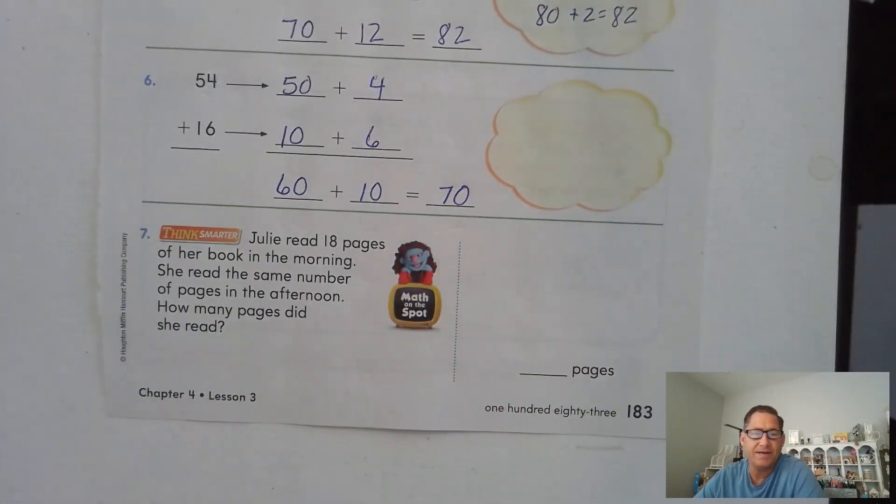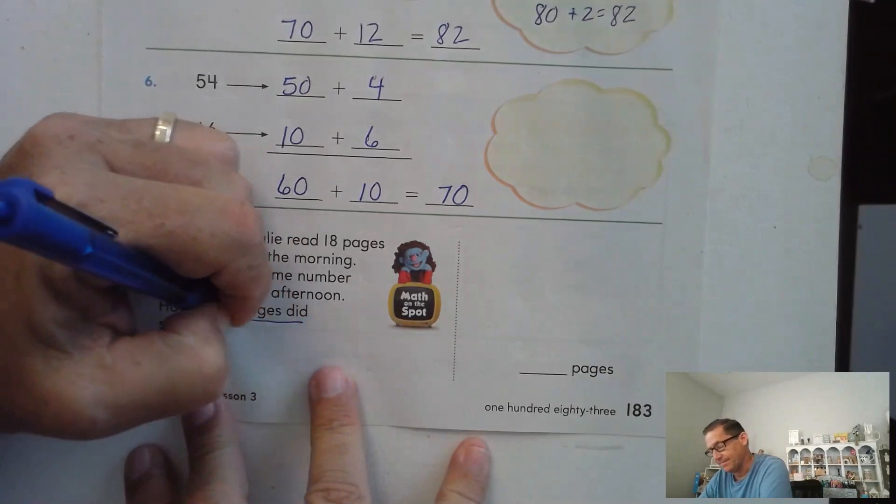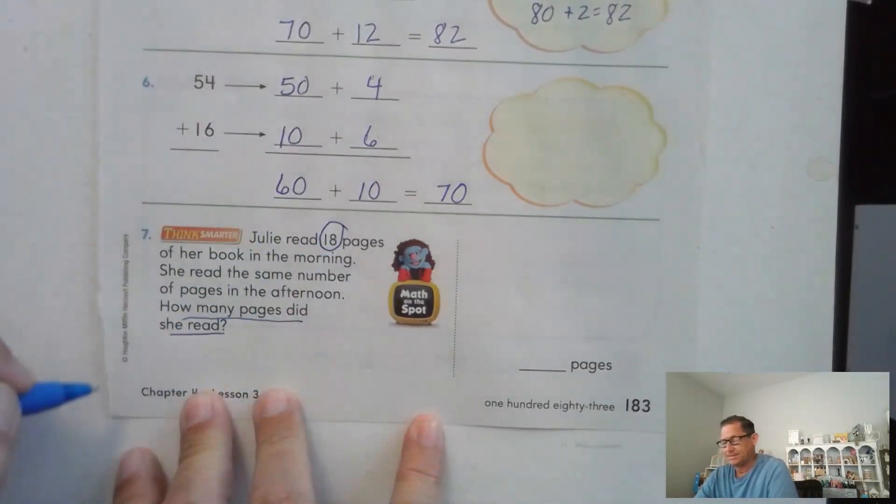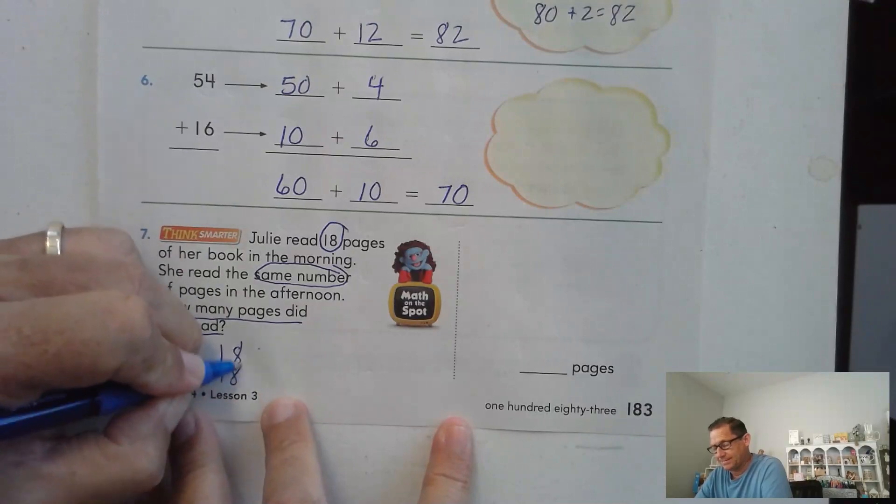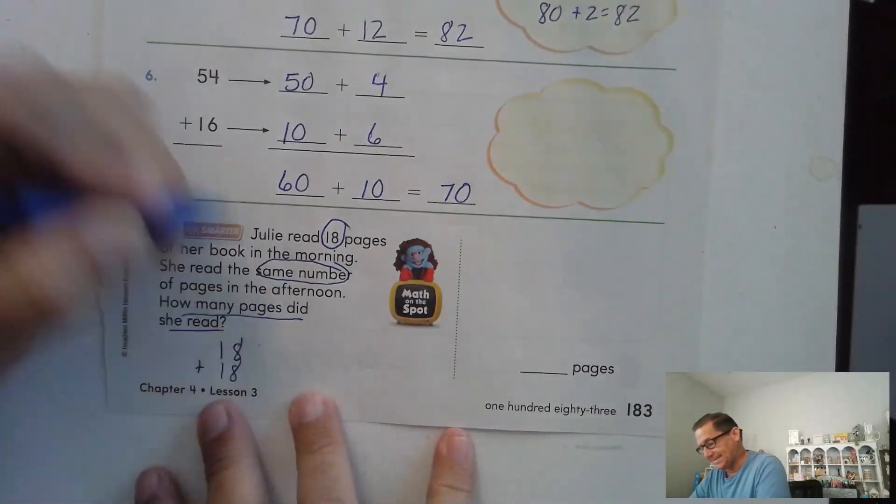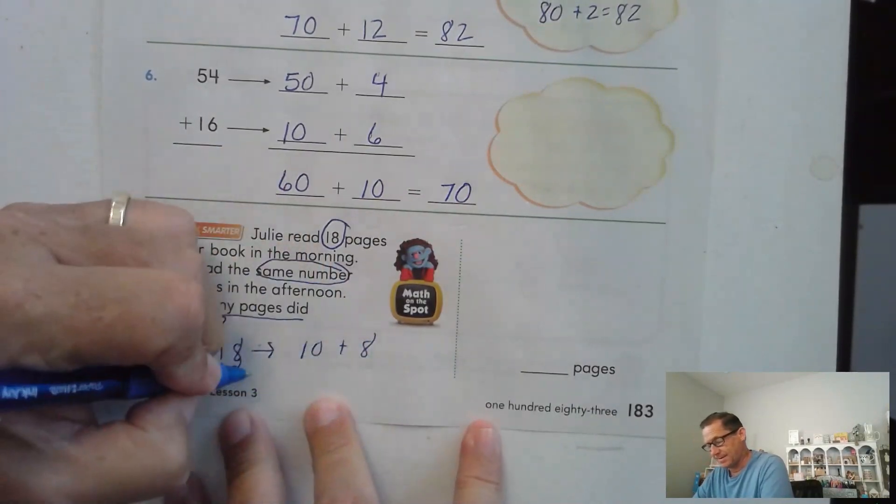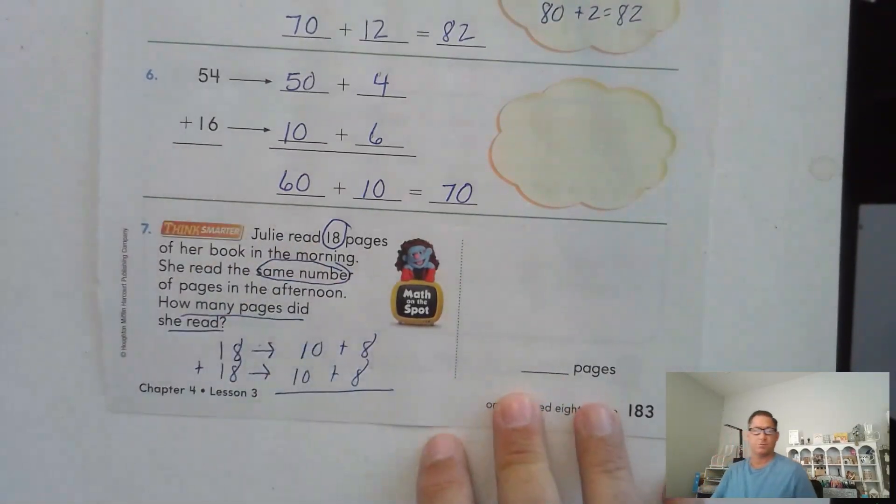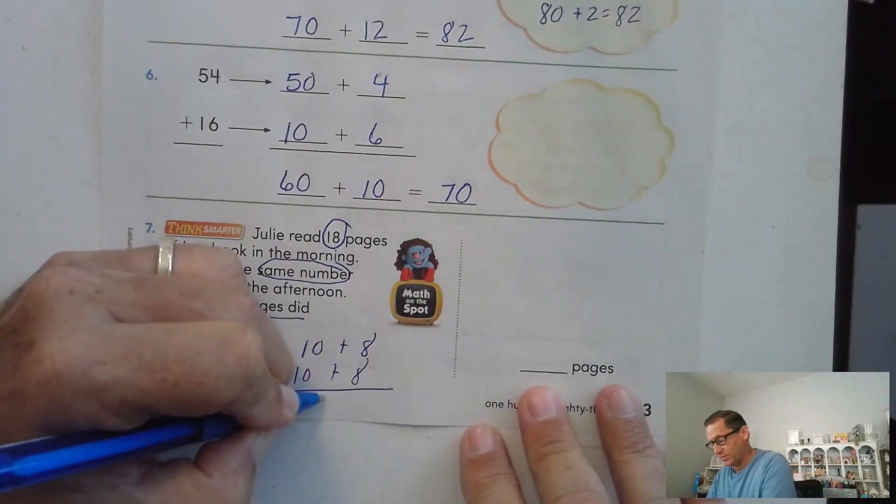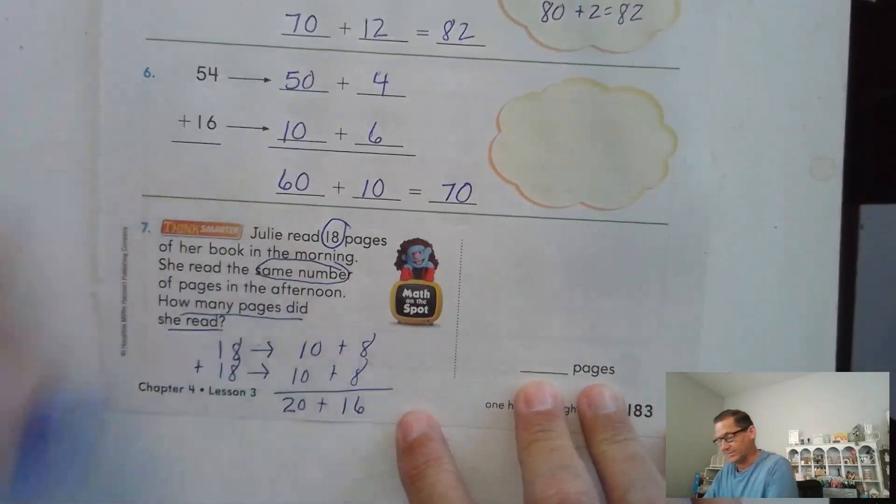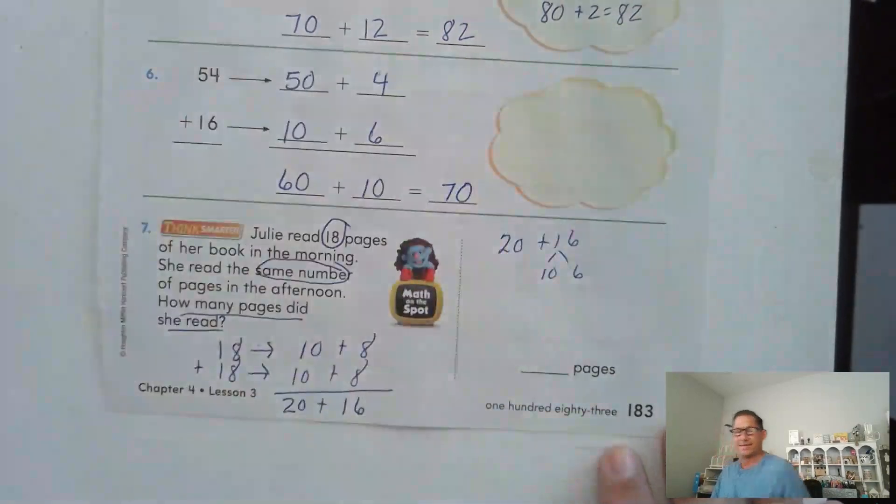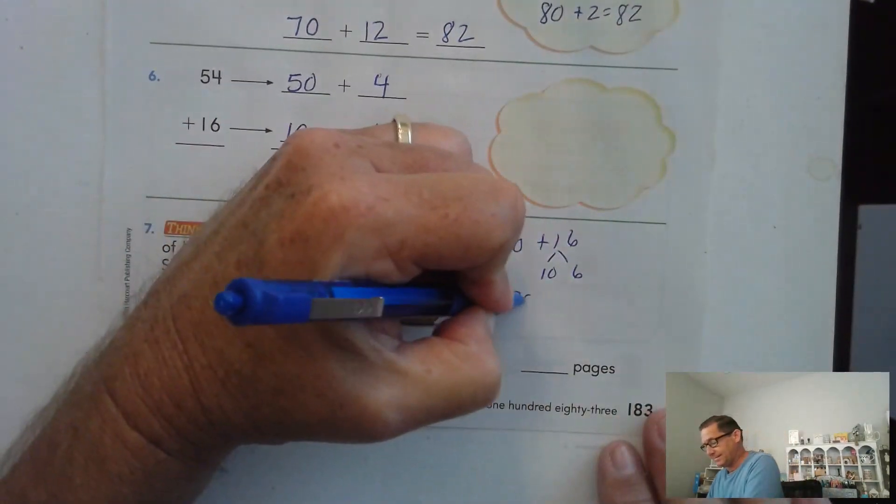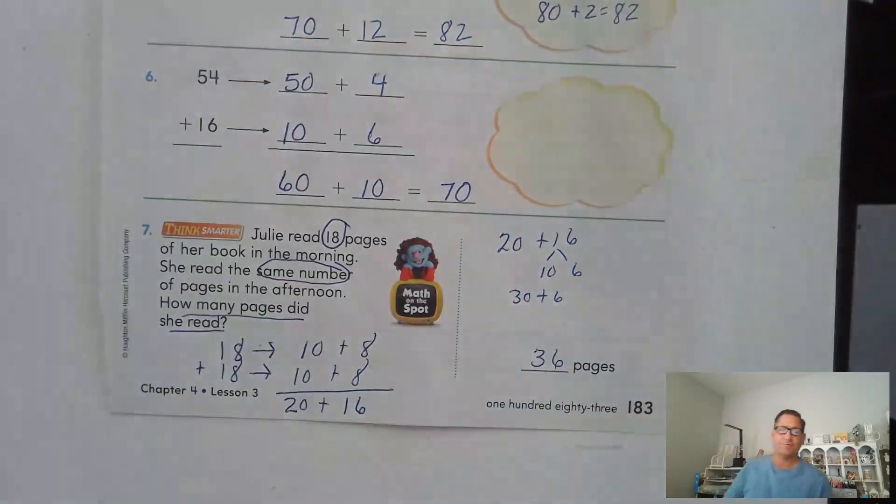Number 7. Julie read 18 pages of her book in the morning. She read the same number of pages in the afternoon. How many pages did she read? So we have 18 in the morning and the same number. So that's 18 plus 18. Well, 18 is 10 plus 8. So how many tens do we have? We have two tens, which is 20. And 8 and 8, we know the sum of those doubled is 16. So 20 plus 16. We can think of 16 as 10 plus 6. 20 and 10 is 30 plus 6. So she read 36 pages.